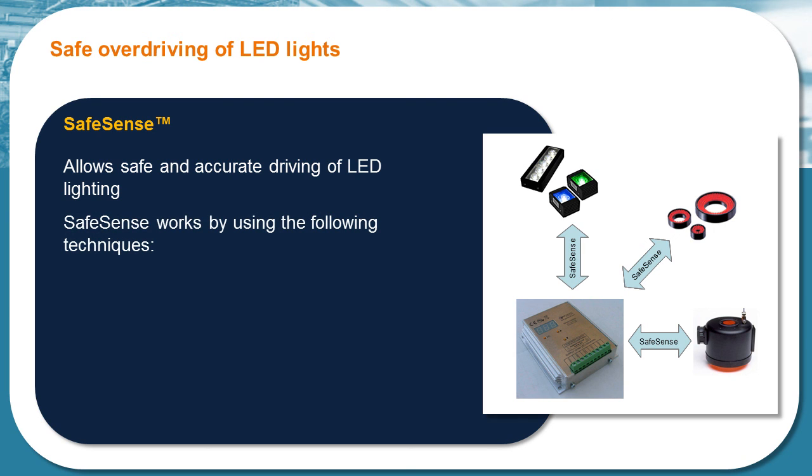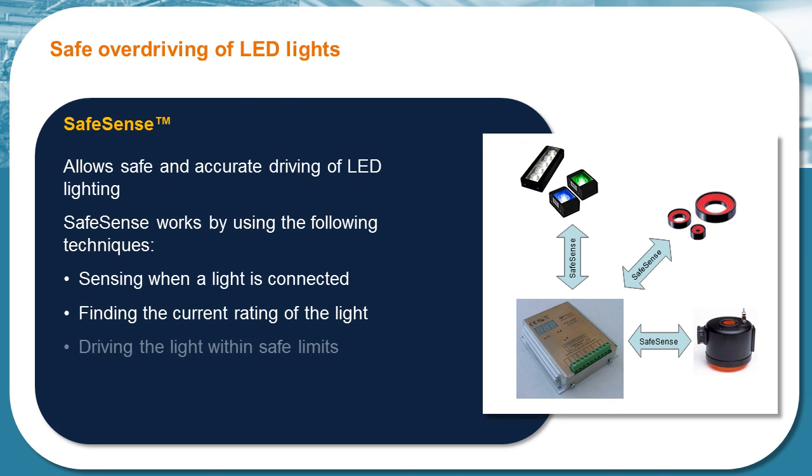SafeSense works by using the following techniques: sensing when a light is connected, finding the current rating of the light, driving the light with safe limits, and detecting faults.